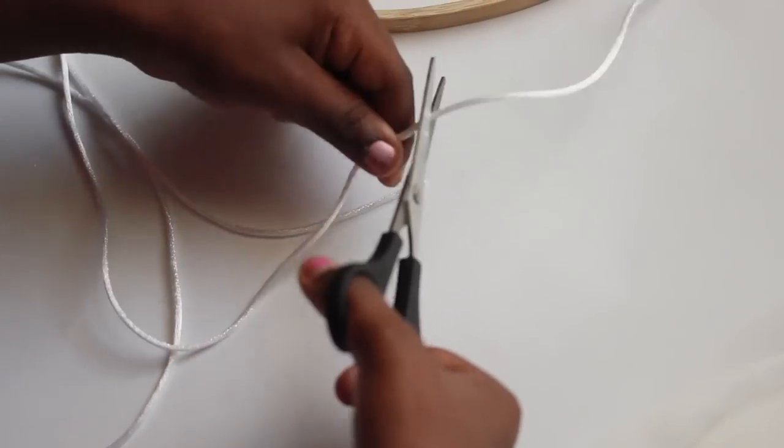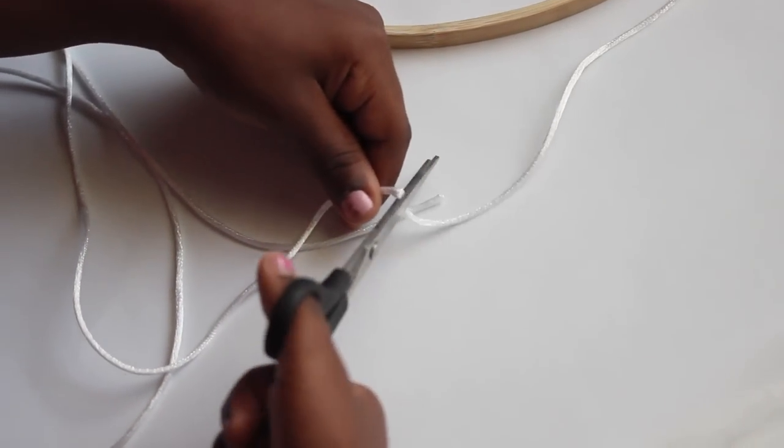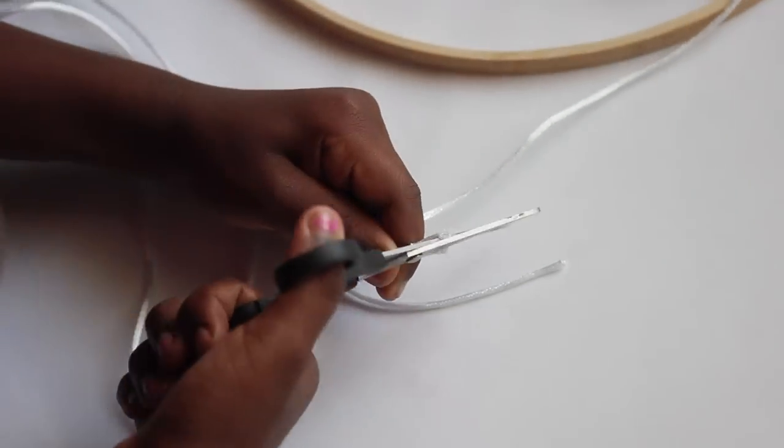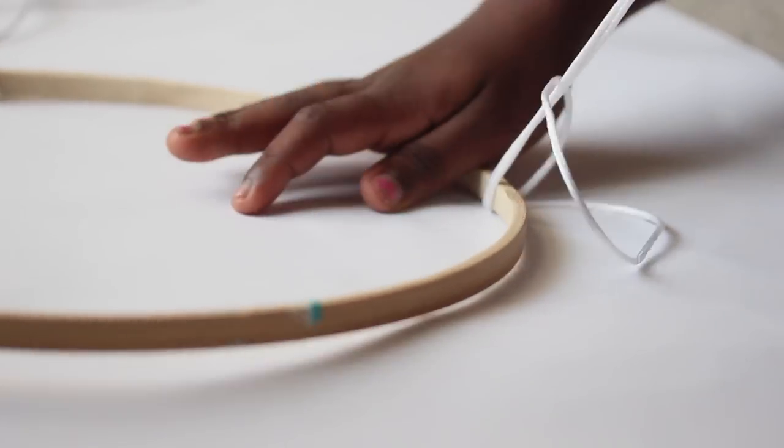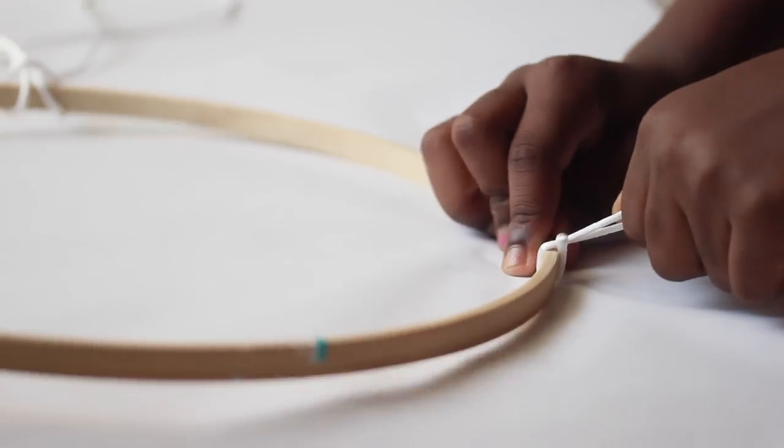At this point you want to determine how low you want your canopy to hang. So based on that measurement you are going to cut your string and do three loop knots on the inner ring.